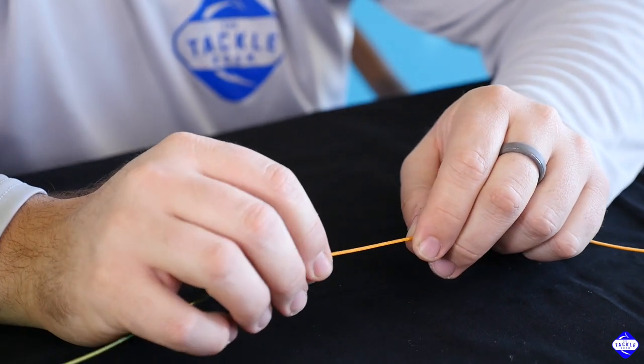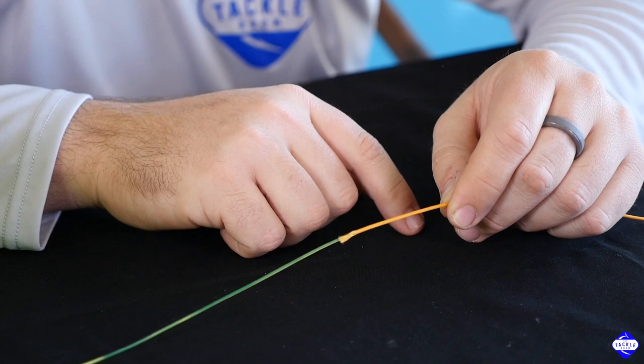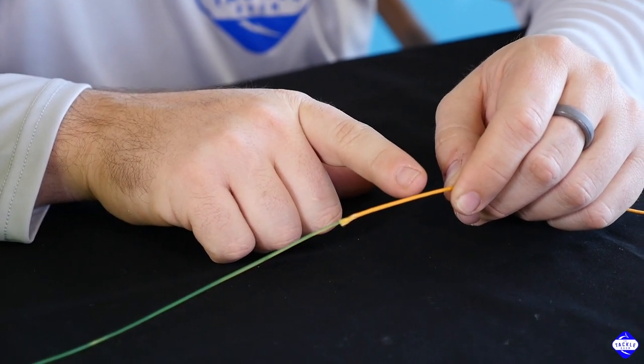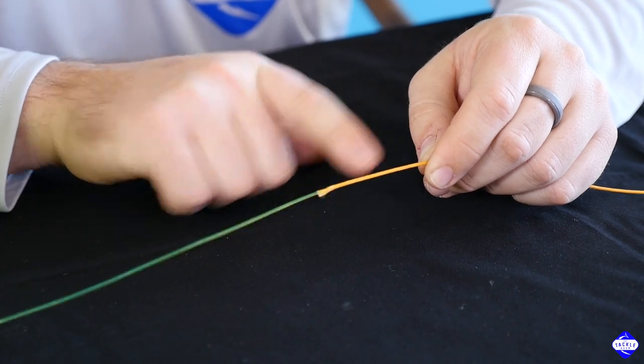The best way to do this is with 30 or 50 pound floss. All you have to do there is take and just half hitch the floss over top of the braid right here.